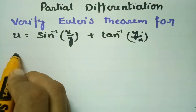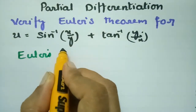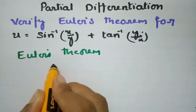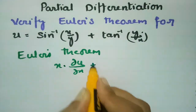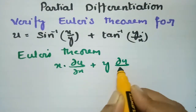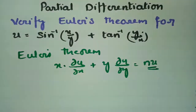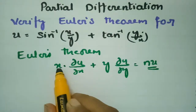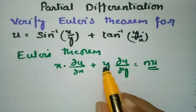So what is Euler's theorem? According to Euler's theorem we have x into ∂u/∂x plus y into ∂u/∂y is equal to n into u. First I have to make a derivative with respect to x and multiply with x, and again make a derivative with respect to y and multiply with y.